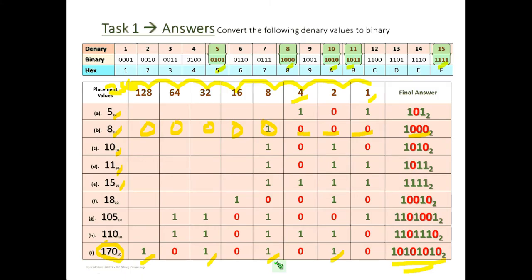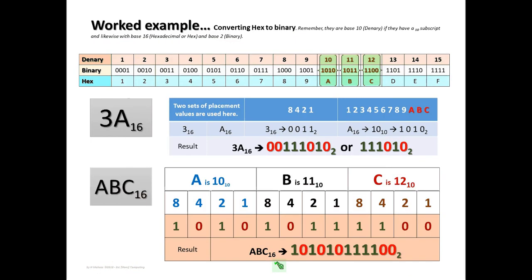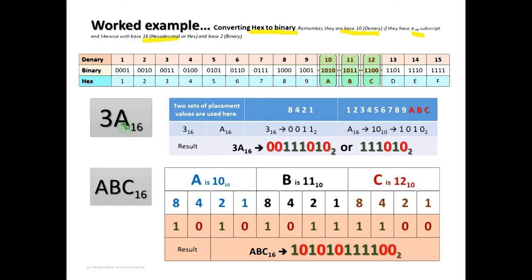I'm moving on to the next example. This shows how to convert hexadecimal to binary. Remember, base 10 is denary with a subscript 10, and hexadecimal has a subscript 16. We're going to convert hexadecimal back to binary.